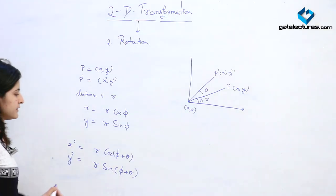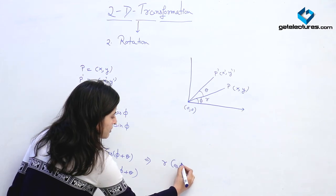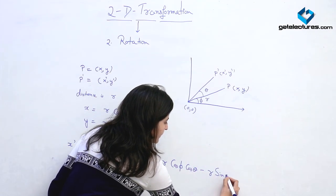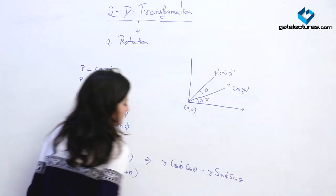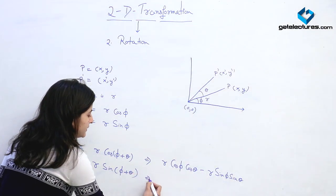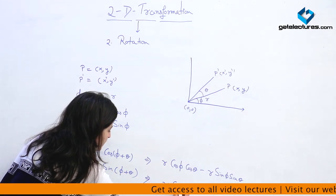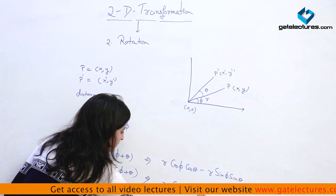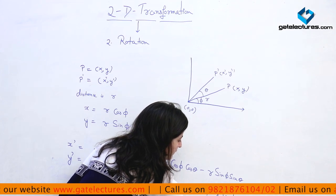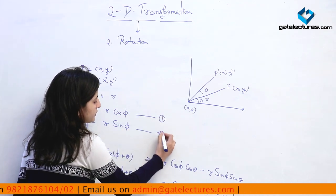We expand these two using the formulas cos(a+b) and sin(a+b). Expanding x dash gives r cos phi cos theta minus r sin phi sin theta. Similarly, expanding y dash gives r sin phi cos theta plus r cos phi sin theta.